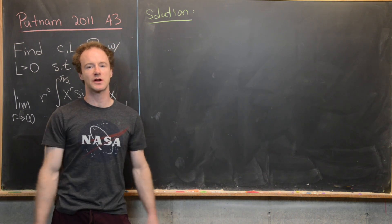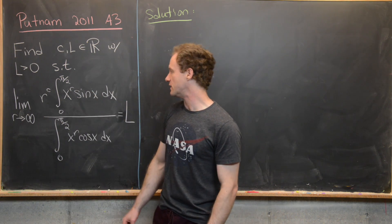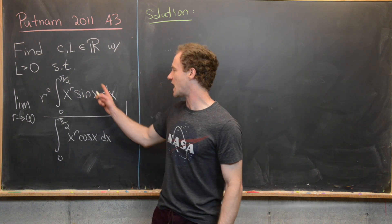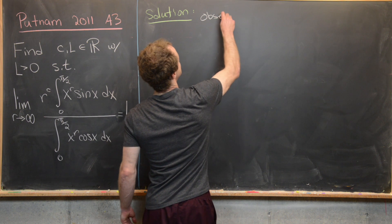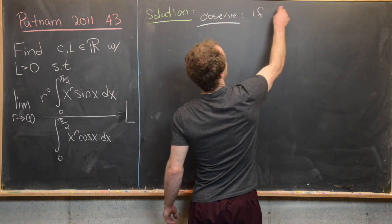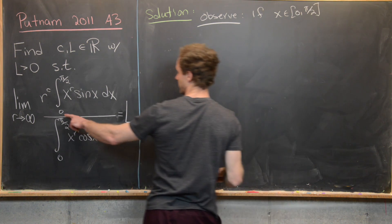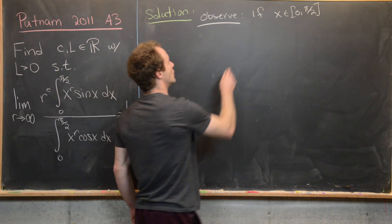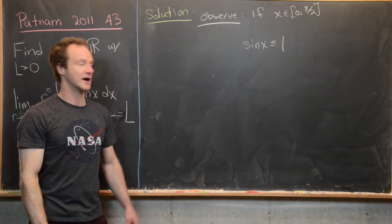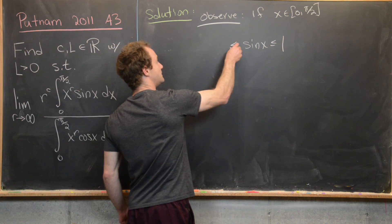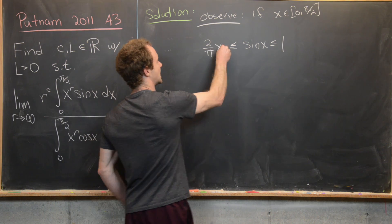Now we're going to look at a full solution, starting with playing around with the integral in the numerator using an obvious bound of the sine function. The first thing to observe is that if x is on the closed interval 0 to π/2 — which is important because those are the limits of integration — we have sine of x is less than or equal to 1.